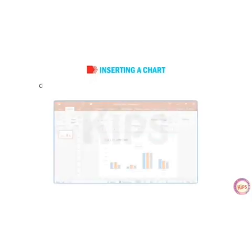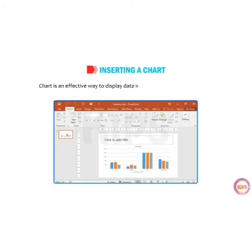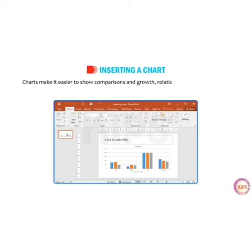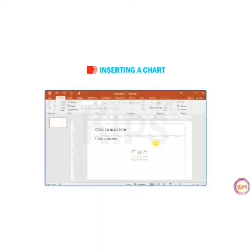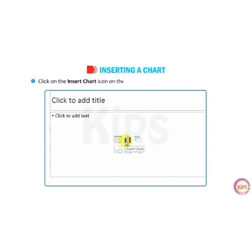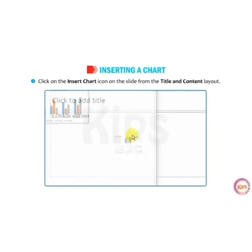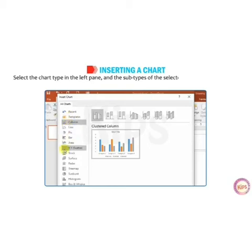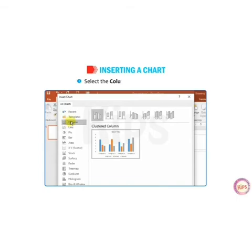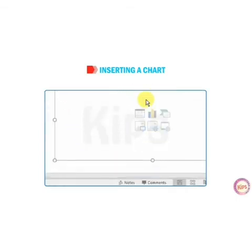The next topic is inserting a chart. You can insert a chart, which is an effective way to display data in graphical or pictorial form. Charts make it easier to show comparisons, growth, and relationships among values and trend data. The chart provides an accurate analysis of information. To insert a chart, click on the Insert Chart icon on the slide from the Title and Content layout. The Insert Chart dialog box will appear. Select the chart type in the left pane and the subtype will be reflected on the right pane. Select the Column chart and click OK.